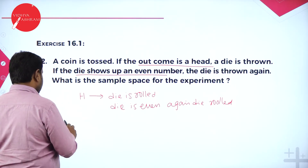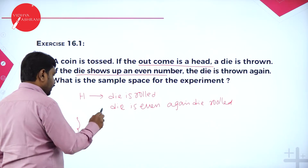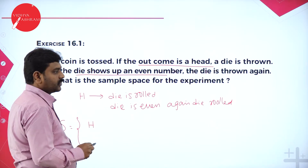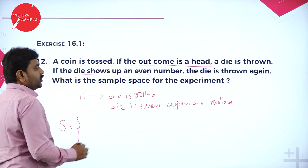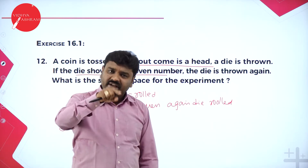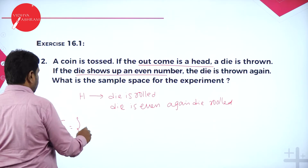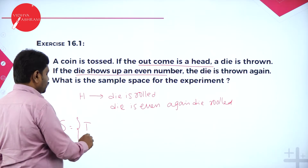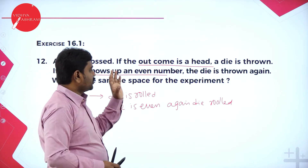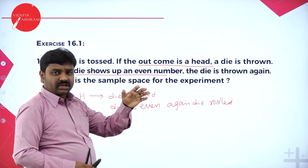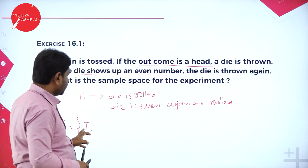Sample space is the set of all possible outcomes. First I toss a coin. When you toss a coin, you may get head or tail. Say I got tail — so I tossed a coin and got tail, and that's it. When you toss a coin, if you get head then you should proceed; if you get tail, stop it.